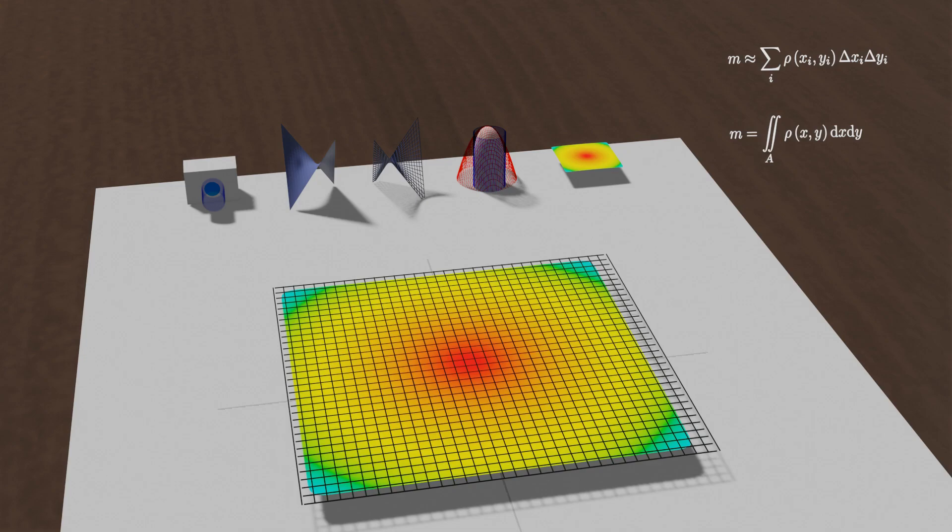If we sum all of these masses, we will have the mass of the flat body. And of course, when delta x and delta y go to zero, we will have the mass equal to this double integral.